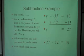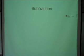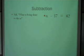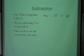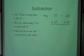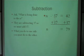Let's try another example. N minus 37 equals 42. What is being done to the N? We're subtracting 37, so we have to do the opposite and add 37. What we do to one side, we must do to the other. The left side will cancel out, leaving just N. The right side gives us the answer: N equals 79, since 42 plus 37 is 79.